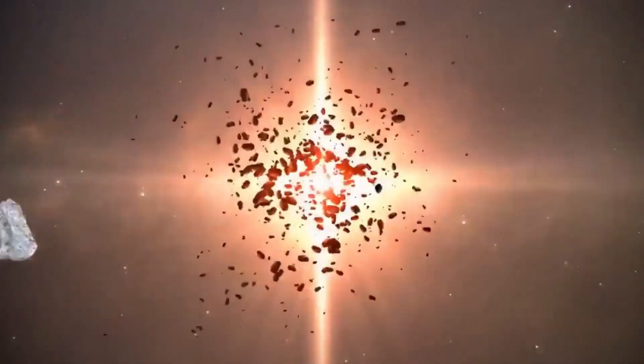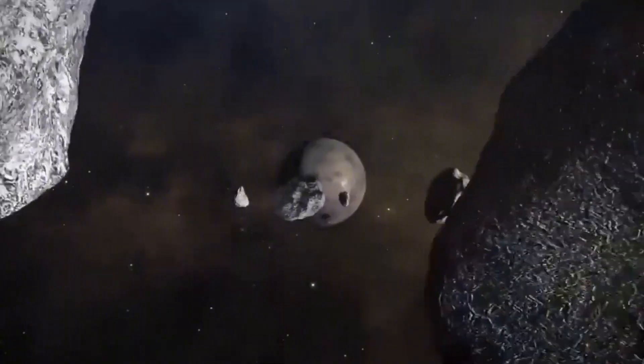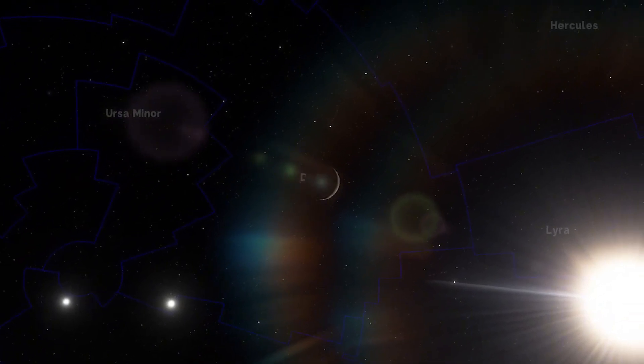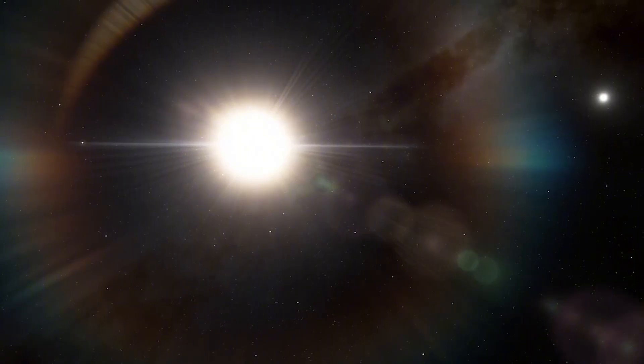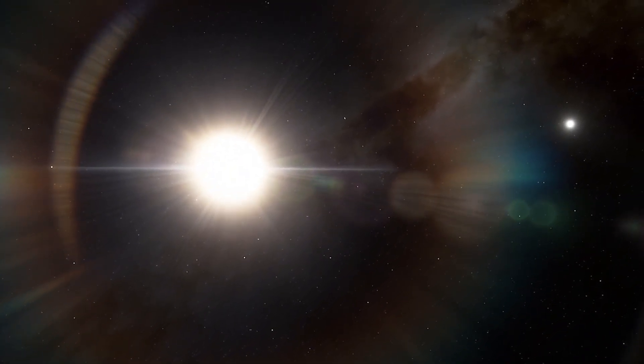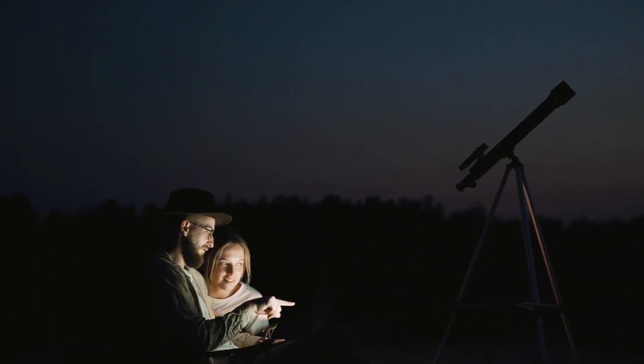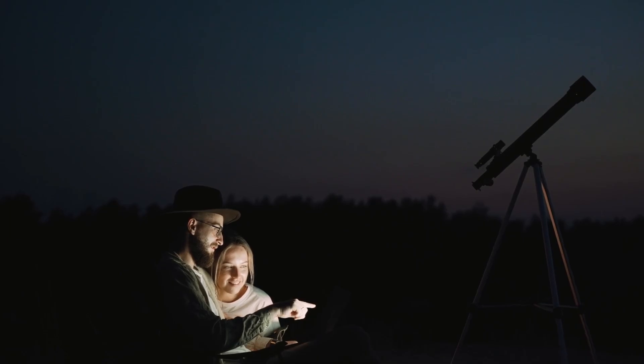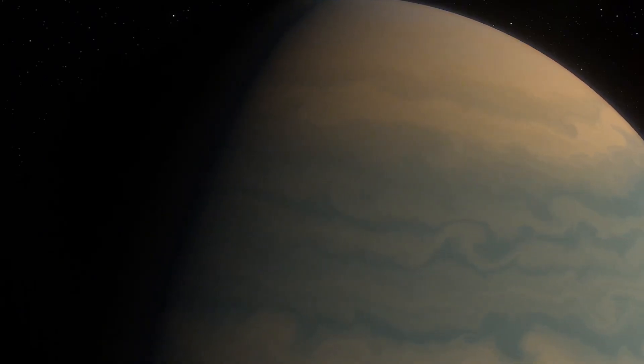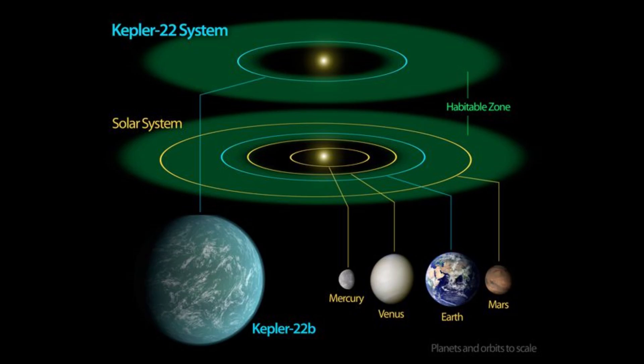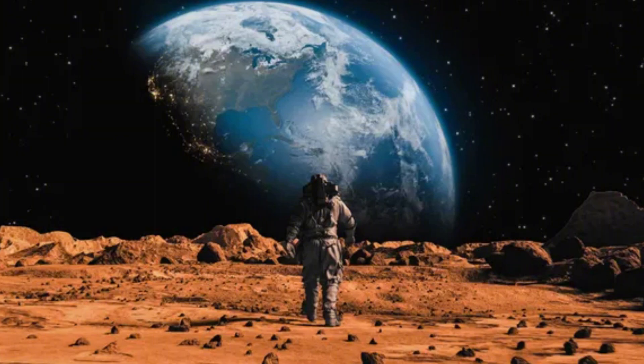According to our theories of planet formation, a world this big shouldn't be rocky. It should have enough gravity to hold onto a thick atmosphere of hydrogen and helium, becoming a gas giant like Neptune. But Kepler-10c defied those expectations. It's a solid, rocky world, just on a scale we never thought possible. To understand how weird this is, let's do a quick thought experiment. Imagine you could stand on the surface of Kepler-10c. The gravity would be crushing, about three times stronger than Earth's.